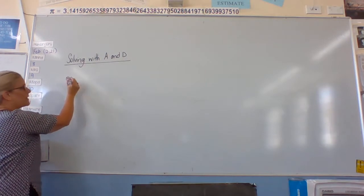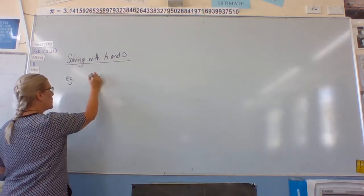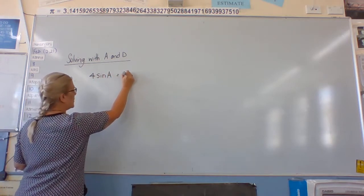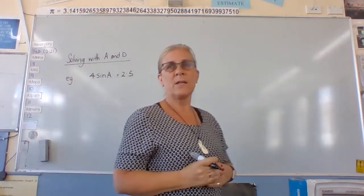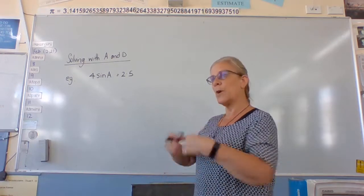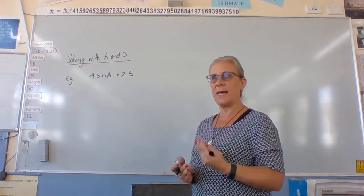Let's have a look. We'll just do one with A first. So we've got 4 sine A equals 2.5. It's an equation, it's got an equal sign in it. It's only got one unknown. We only need one equation for one unknown, and that is it. The unknown we are looking for is A.